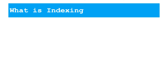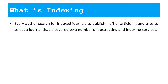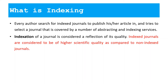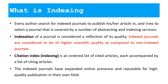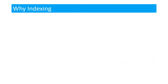So what is indexing? Every author searches for indexed journals to publish their articles and tries to select a journal covered by a number of abstracting and indexing services. Indexing of a journal is considered a reflection of its quality. Indexed journals are considered to be of higher scientific quality compared to non-indexed journals. A citation index is an ordered list of cited articles, each accompanied by a list of citing articles. Indexed journals have expanded online presence and are reputable for high quality publication.